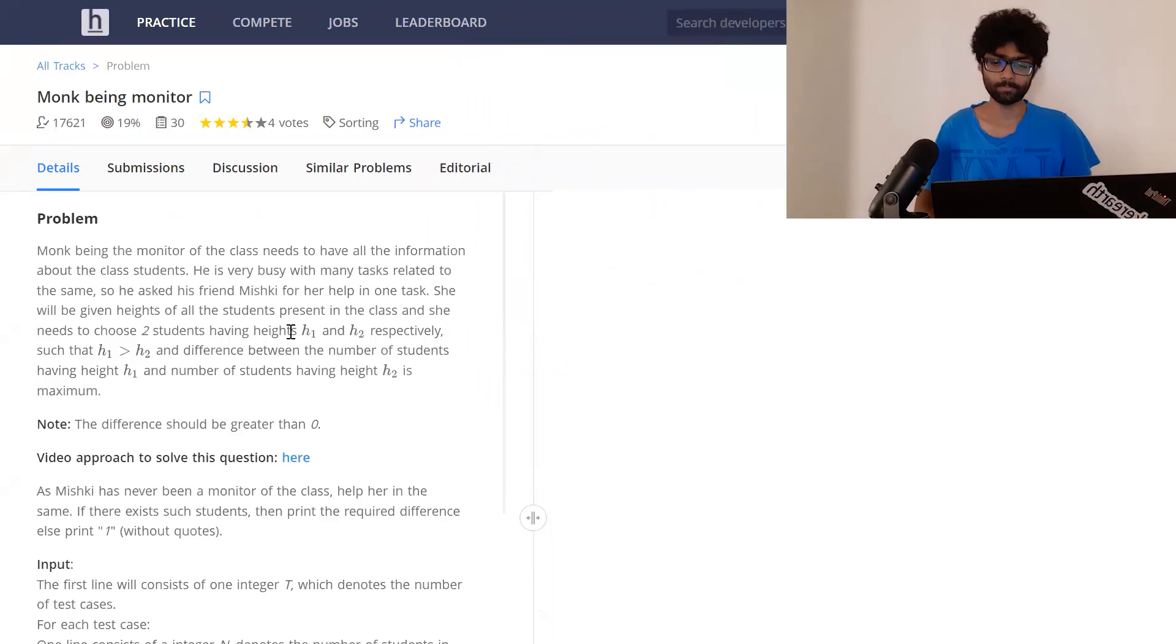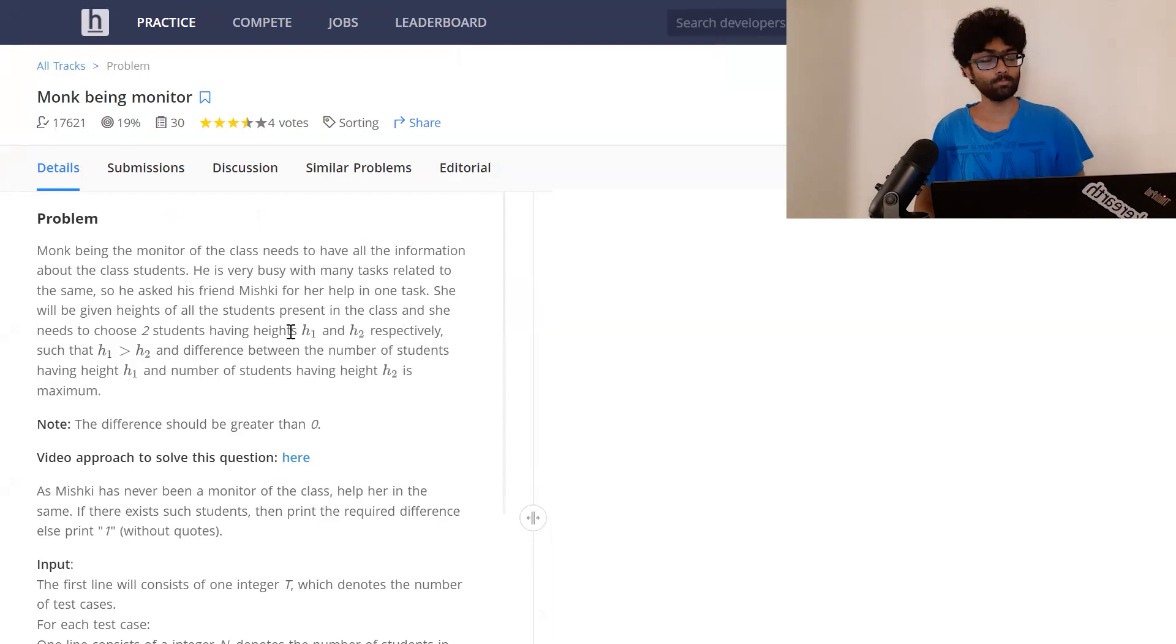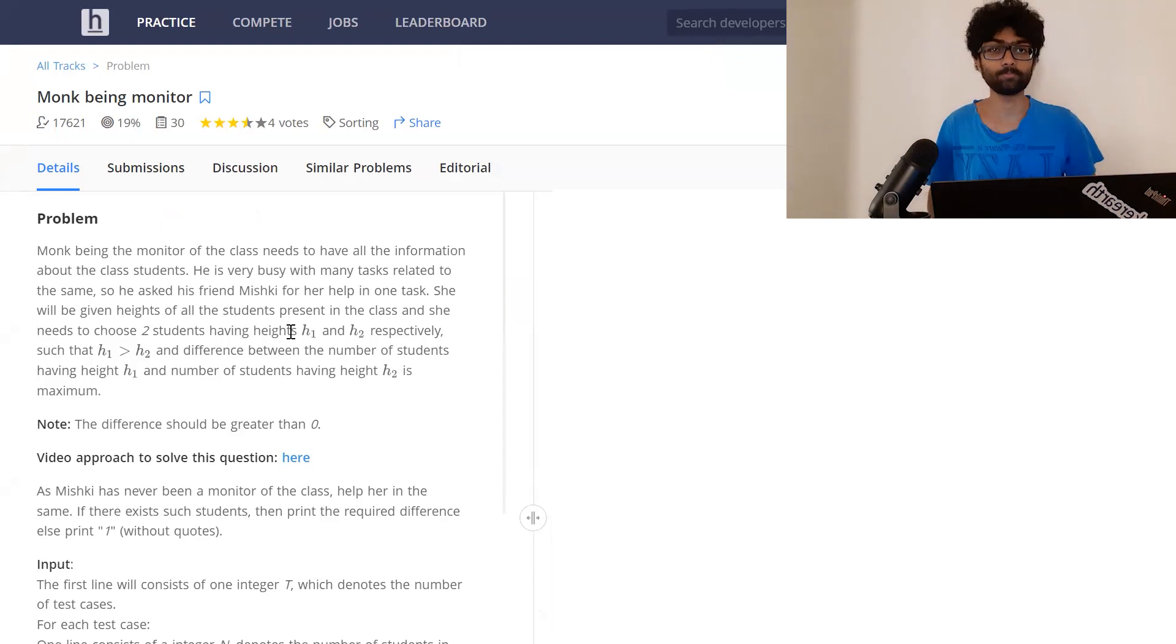Now the problem is pretty simple. You're given an array of heights, an array of numbers denoting heights. What you have to do is choose two students, h1 and h2, such that h1 is greater than h2 and the difference between their frequencies is the maximum. Finally, if the difference is not greater than zero, we've got to print minus one.